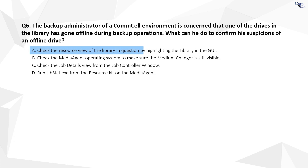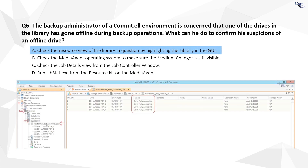The correct answer is A. If any tape drive has gone offline, you can check the status in Resource View. Expand Storage Resources, Libraries, Tape Library, and select the master pool. On the right hand side, you will see the tape drive status showing either offline, fully accessible, or in maintenance.